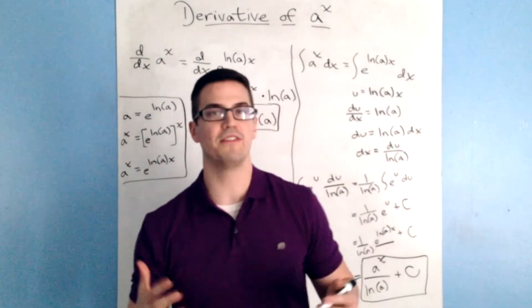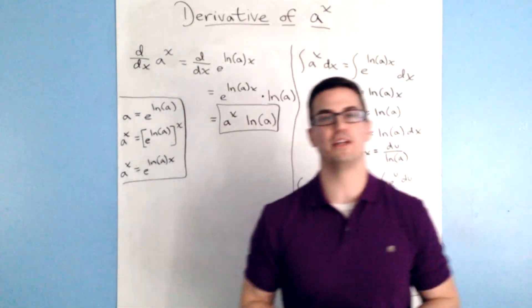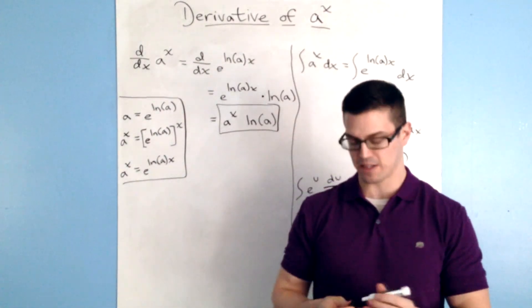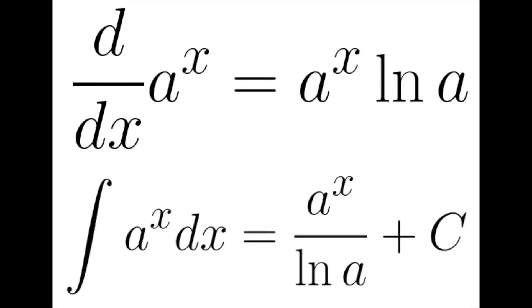So that's the derivative and anti-derivative of a to the x, using the knowledge we have of e to the x. If you have any questions about any of this, let me know.